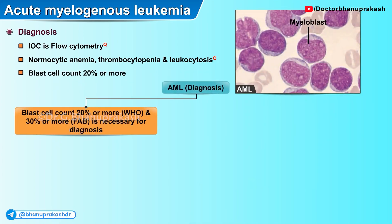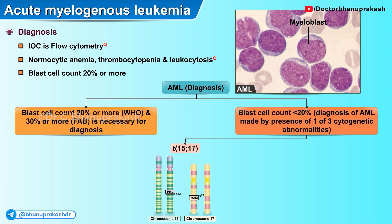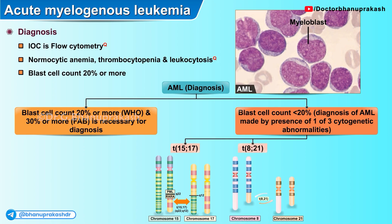Blast cell counts of 20% or more either in the peripheral blood or bone marrow are necessary for the diagnosis of acute myelogenous leukemia. For cases with lower blast cell count (less than 20%), a diagnosis of AML can still be made if there is presence of any one of the following cytogenetic abnormalities: translocation t(15;17), translocation t(8;21), or inversion 16.